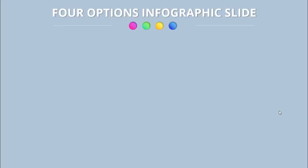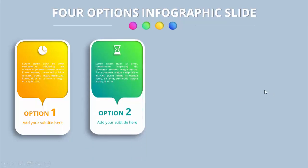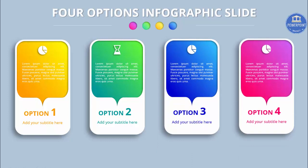In today's tutorial I'm going to show you how to make a four options infographic slide in PowerPoint. When I click, the first option comes up with a very bright gradient color combination of two different colors. I've added the option number, title, subtitle, and detail text along with an icon. Clicking again shows option 2, 3, and 4 each with different color combinations.